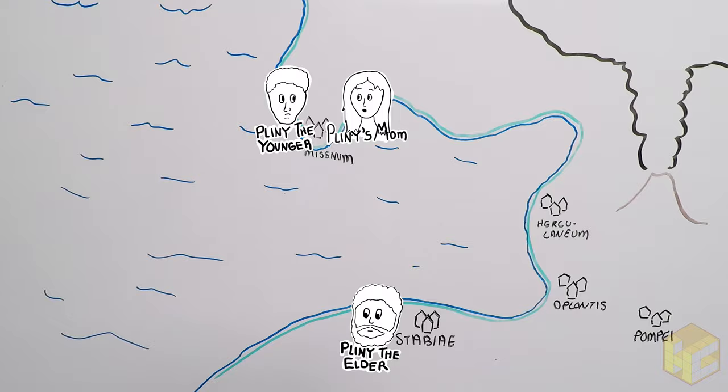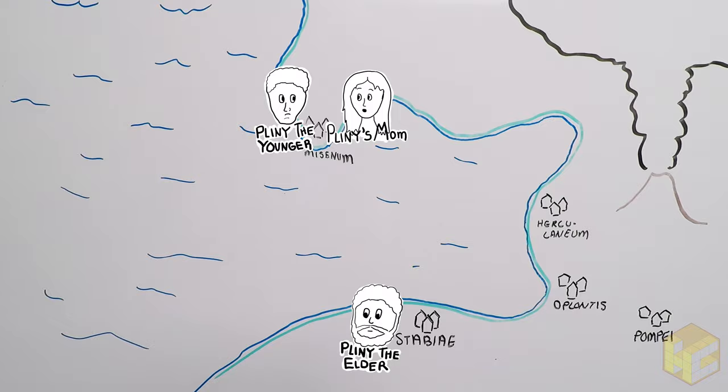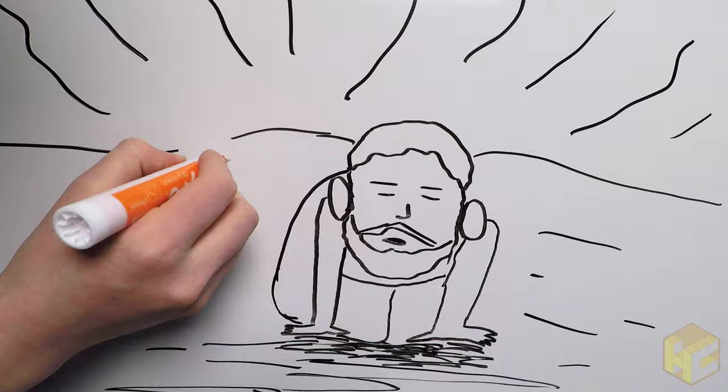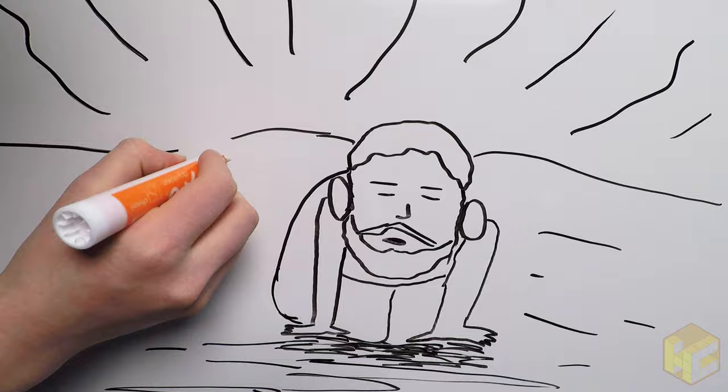In Stabiae, people also fled. The seas were still inhospitable, so they ran over land. Pliny the Elder couldn't go any further and fell to the ground. Pliny the Younger later blamed it on the ash and fumes, although an exact cause is unknown.